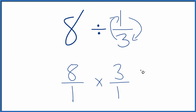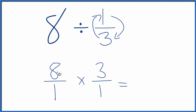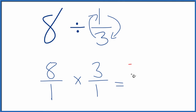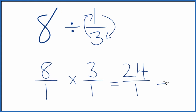Now when we multiply fractions, we multiply the numerators and then the denominators. So 8 times 3 is 24, and 1 times 1 is just 1. And if you divide 24 by 1, you get 24.